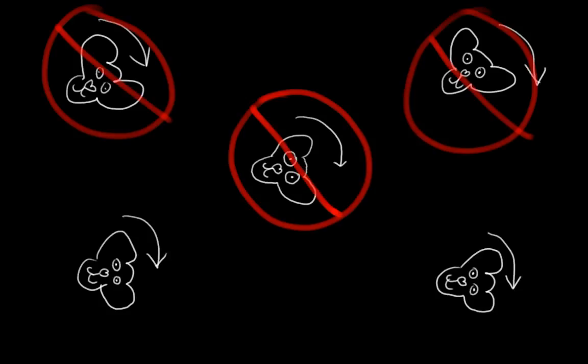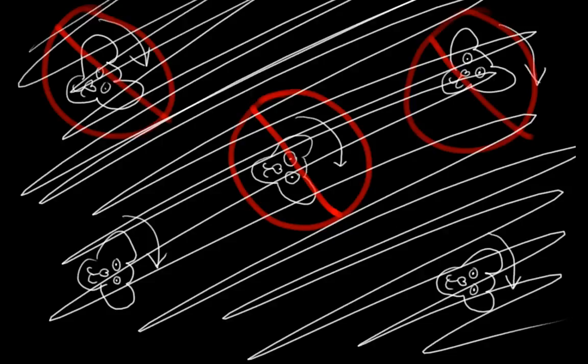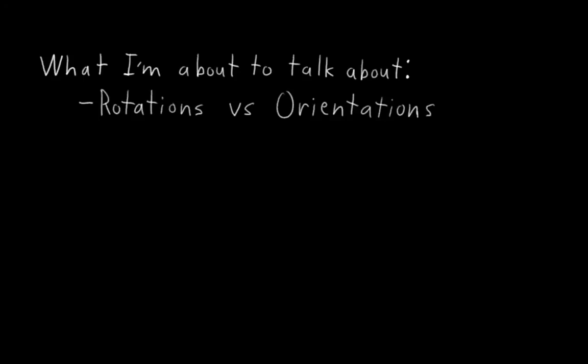Well, it is that simple, but not all the time. Let me start over by summarizing what I'm about to talk about. There are two main things that I want you to get out of this video. The first is the difference between rotations and orientations. The second is how much more complex 3D rotations are than 2D rotations, and the ways that this affects rigging.